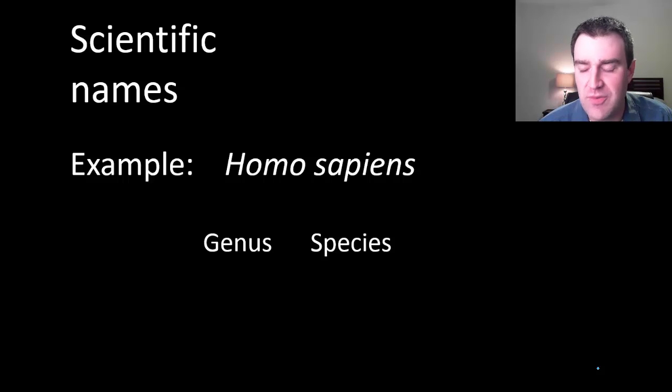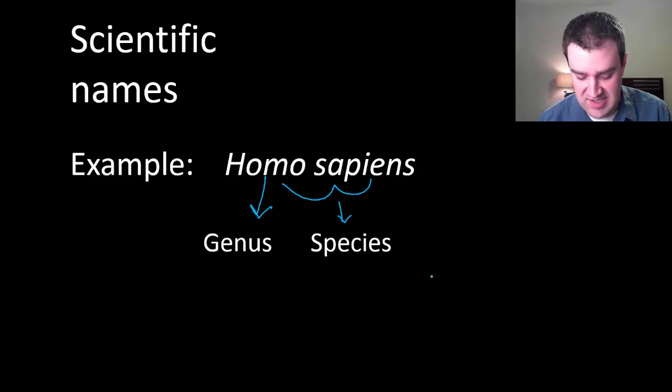The other thing about the Linnaean system is it suggested a two-name system for identifying species specifically. The first name is the genus of the species, so our own scientific name is Homo sapiens. Both names together constitute the species name itself. Typically we capitalize the first name and don't capitalize the second name and we italicize. If you look for that you'll see it's frequently used by biologists to refer to a species so everybody knows what we're talking about.